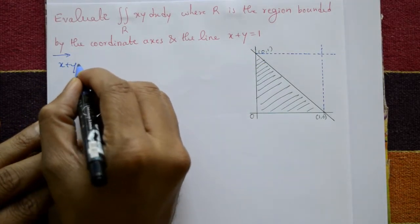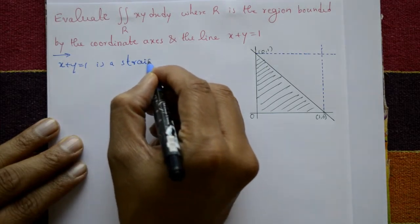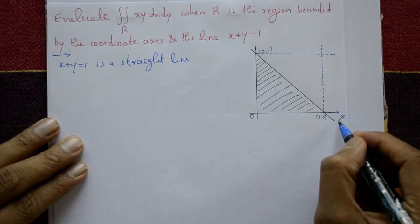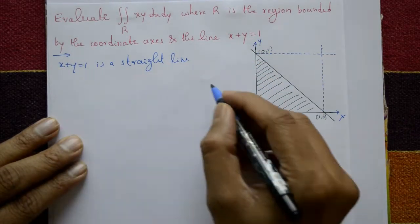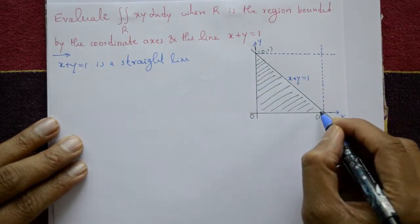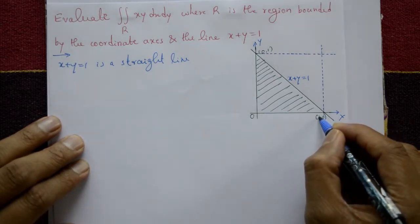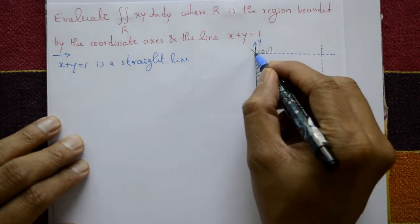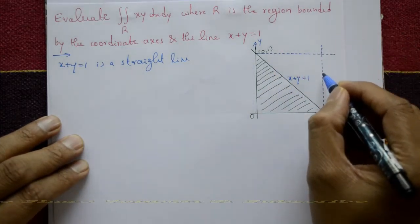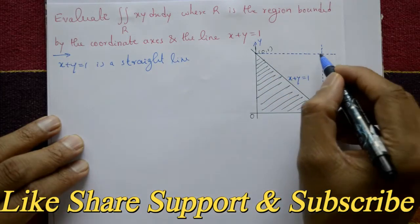x plus y equal to 1 is a straight line. This is the x-axis and this is the y-axis. On the line x plus y equal to 1, at this point x is equal to 1 and y is 0, and at this point x is 0 and y is equal to 1.